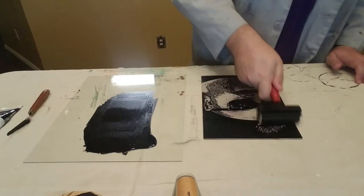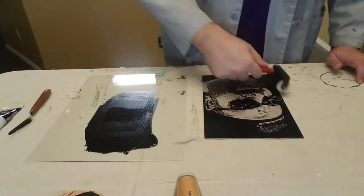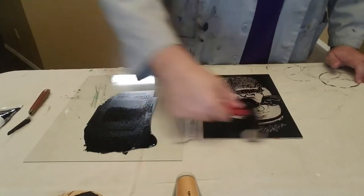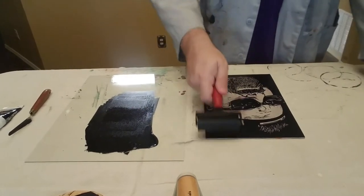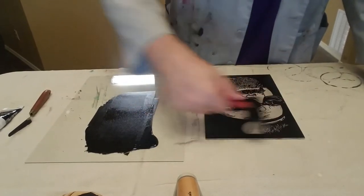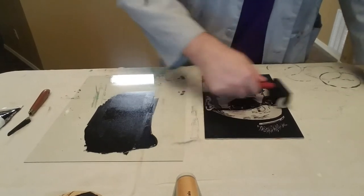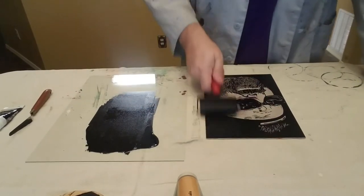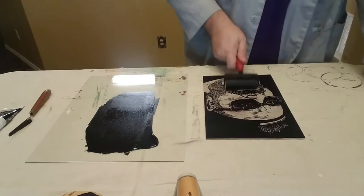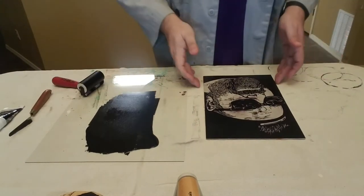So I know it looks like I'm spending forever inking this block up. The first time that you ink a block up it takes a lot more ink, especially when you have this much black space on the block like I do. So the first time that you ink it up it's gonna take the most ink. And regardless of how much ink you put, that first print usually turns out a little bit faded. And you'll see what I'm talking about here in a minute.